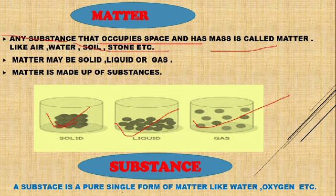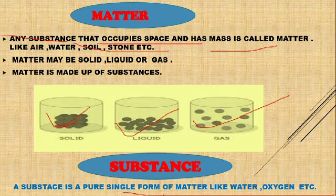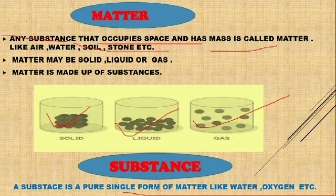Elements and compounds are the pure forms of substance. For example, oxygen, nitrogen, helium, neon — all elements in the periodic table are substances. All compounds like H2O, NaCl, HCl — so many compounds are also substances.